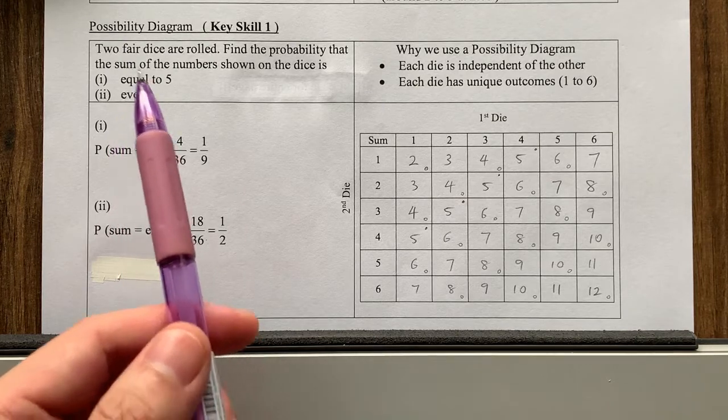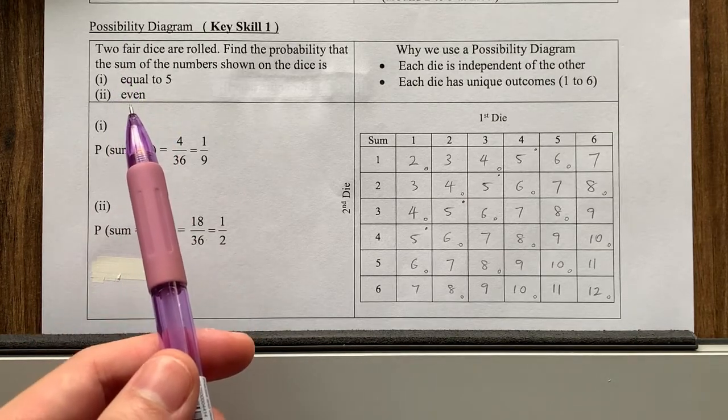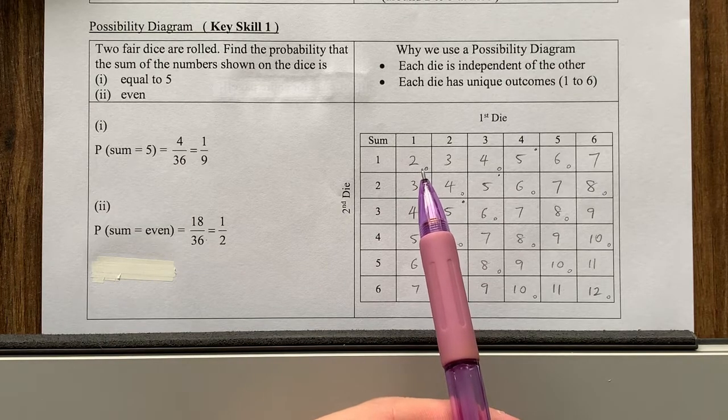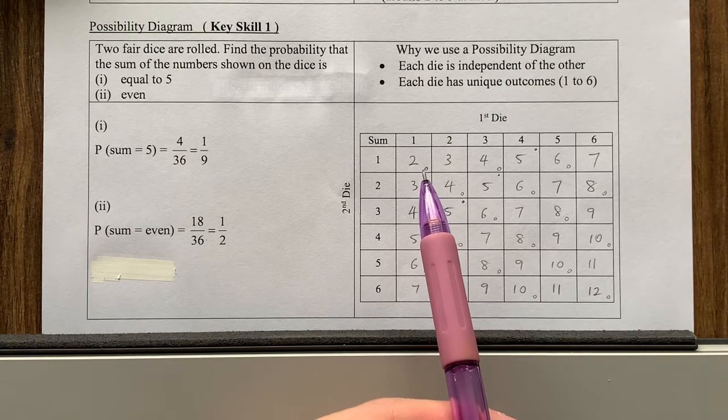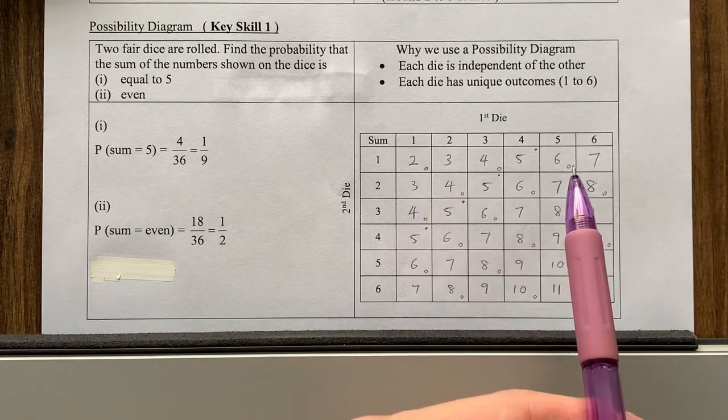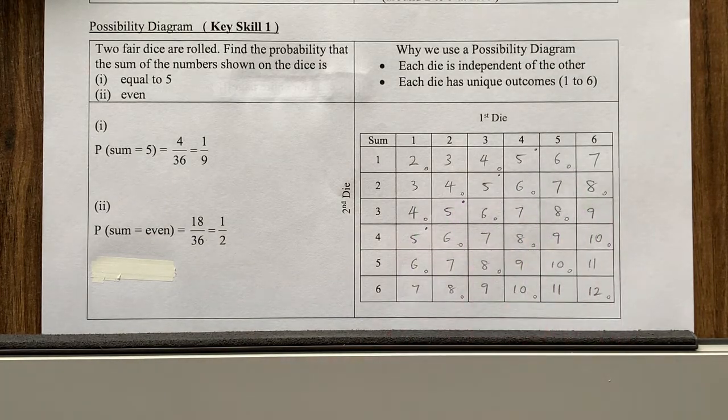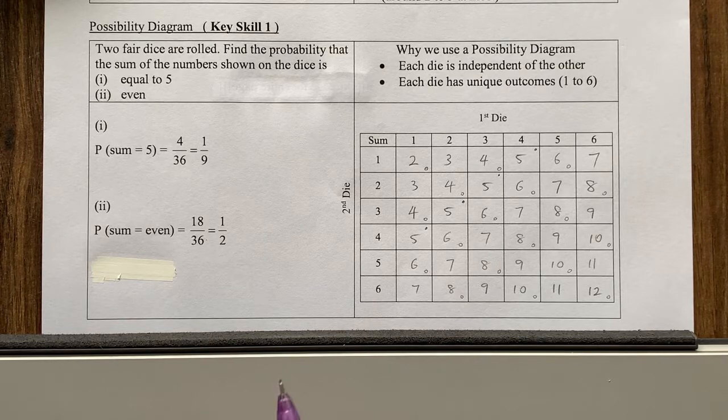So you can see the next part of the question says the sum that are even. So same thing, you'll notice I put a right-hand corner dot here for all the numbers that are even. So like two, four, six are all even. Then four, six, eight, and so on. And after that, I'm going to count. How many of these dots did I draw?